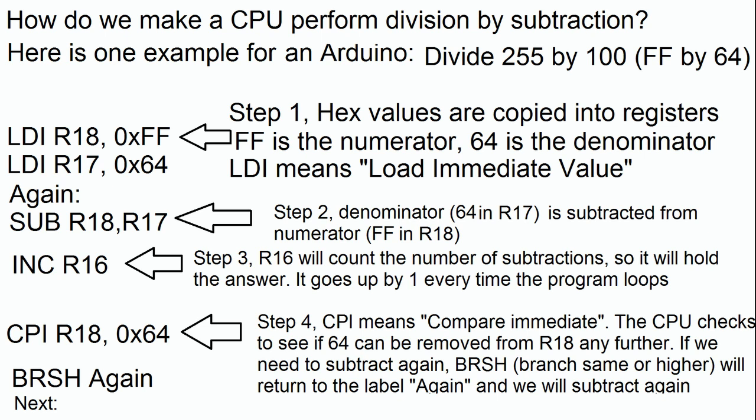Now we're on step two and we can see we have SUB R18, R17. So what's going to happen here is 64 is going to be subtracted from FF. Immediately after this on step three, R16 is incremented, that means it goes up by one. Any time this program loop runs, R16 is going to go up by one.